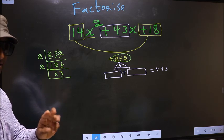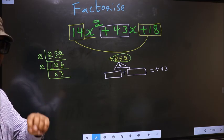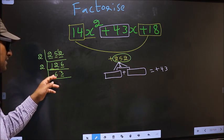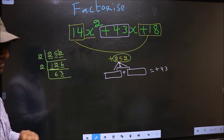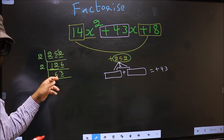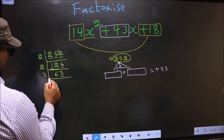Next, prime number 3. To check divisibility by 3, we should add the digits. That is 6 plus 3, 9. Is 9 divisible by 3? Yes. So, this number also divisible by 3. So we take 3 here.